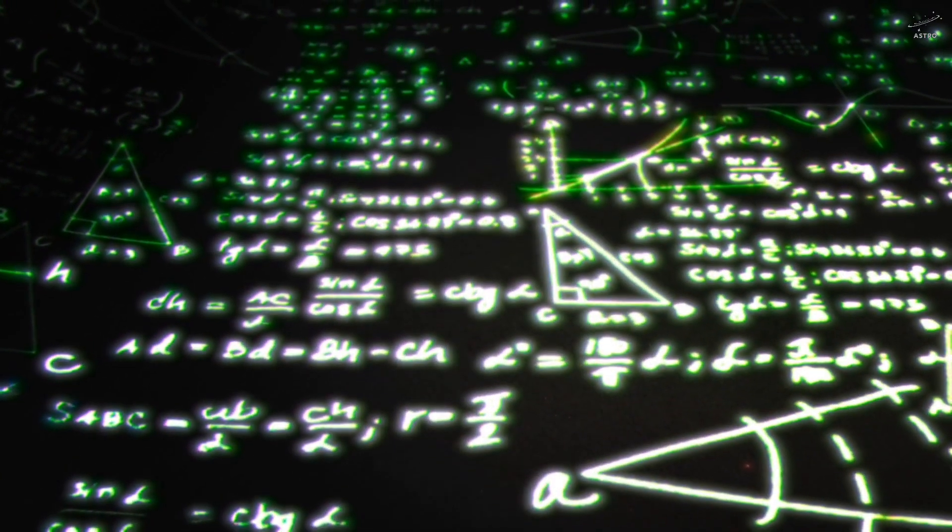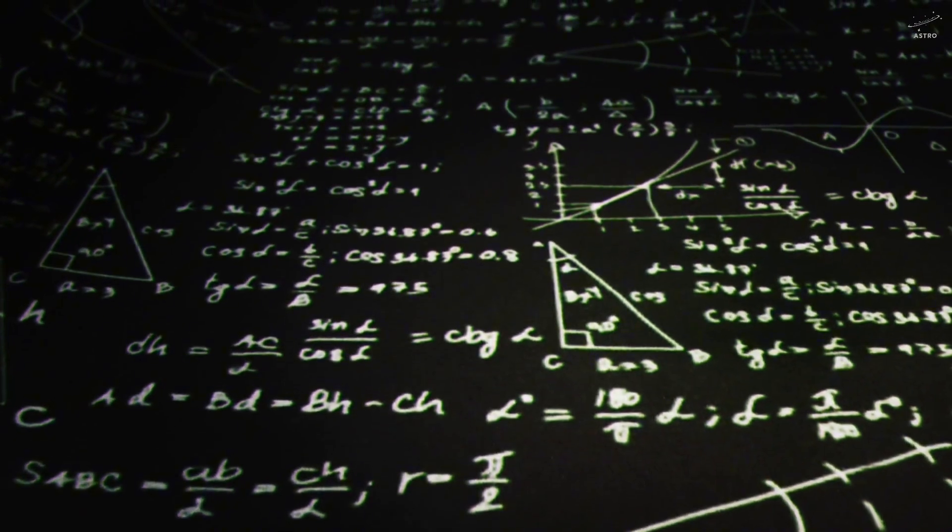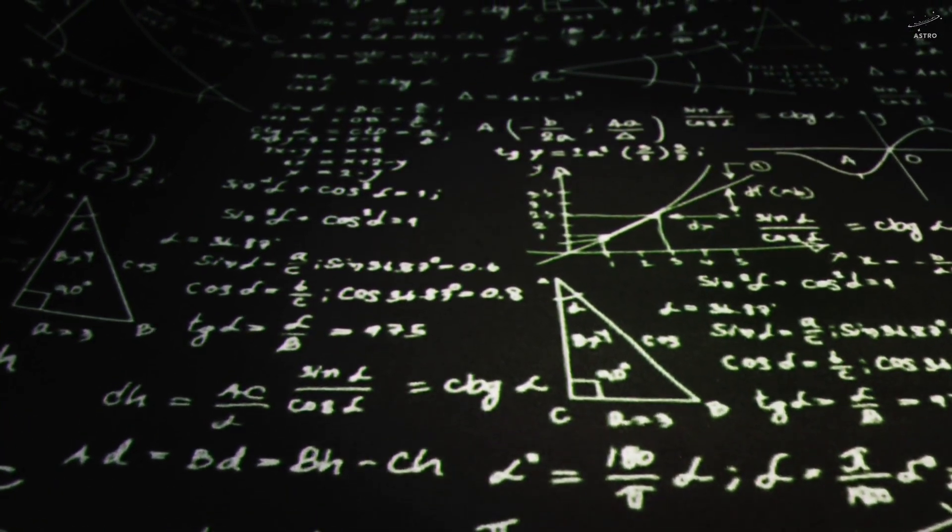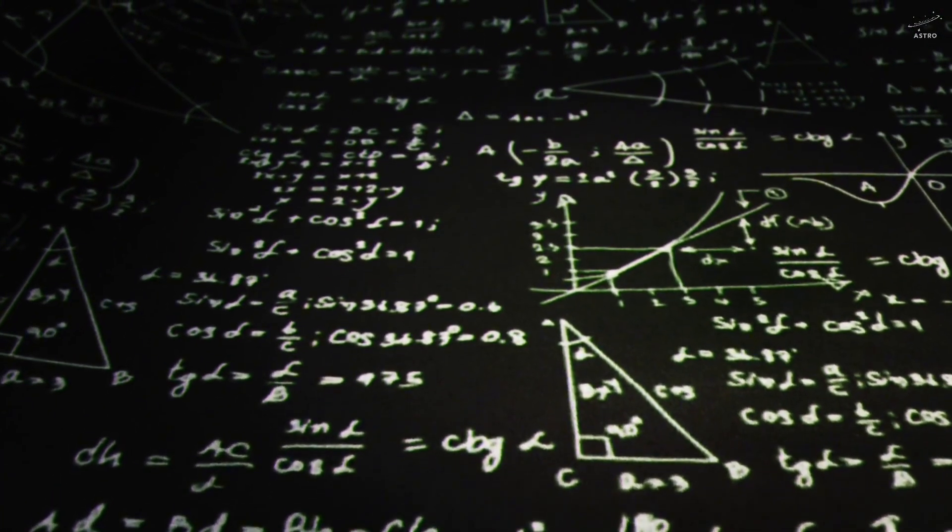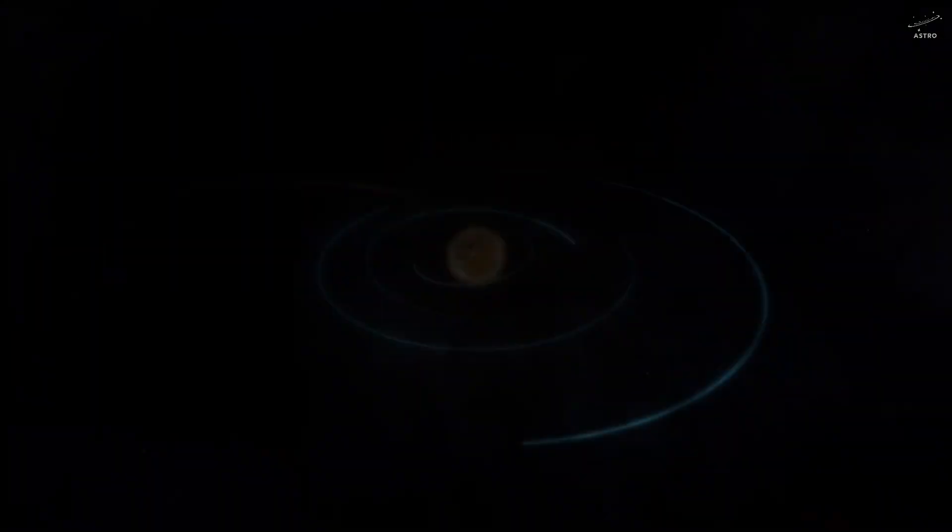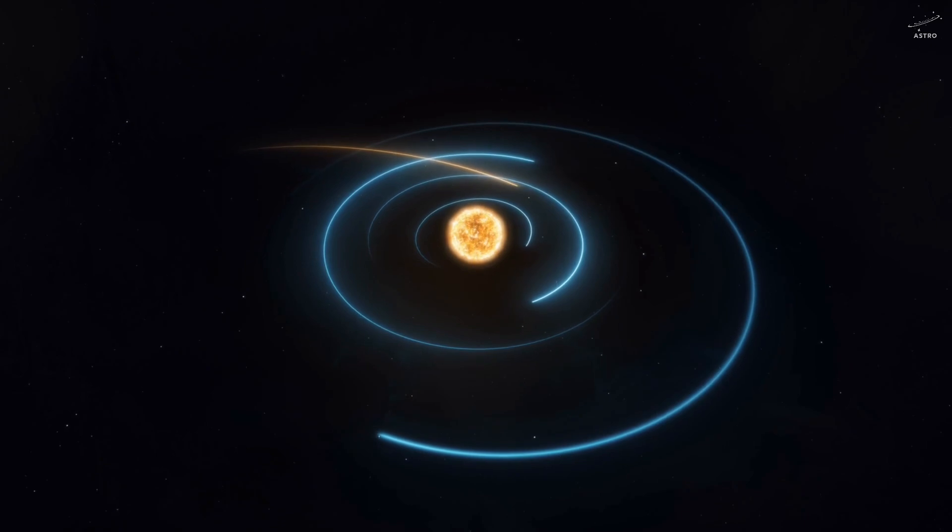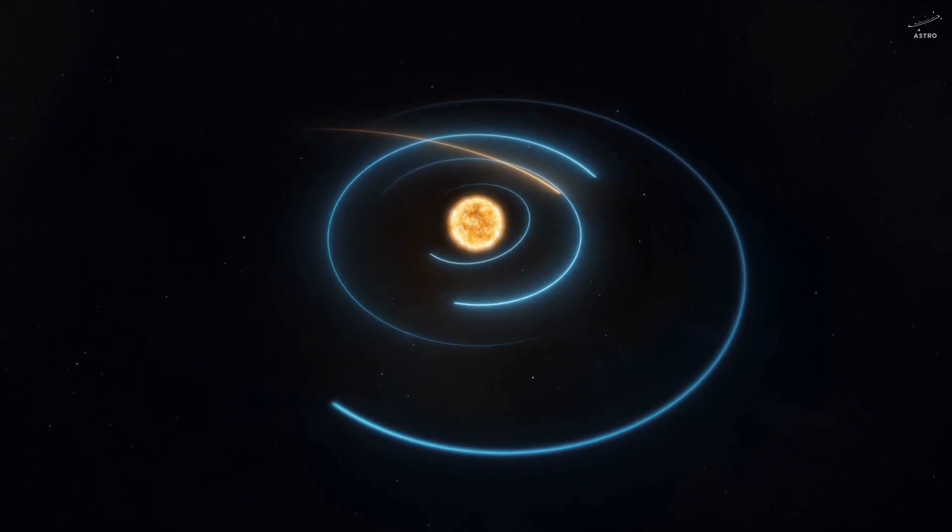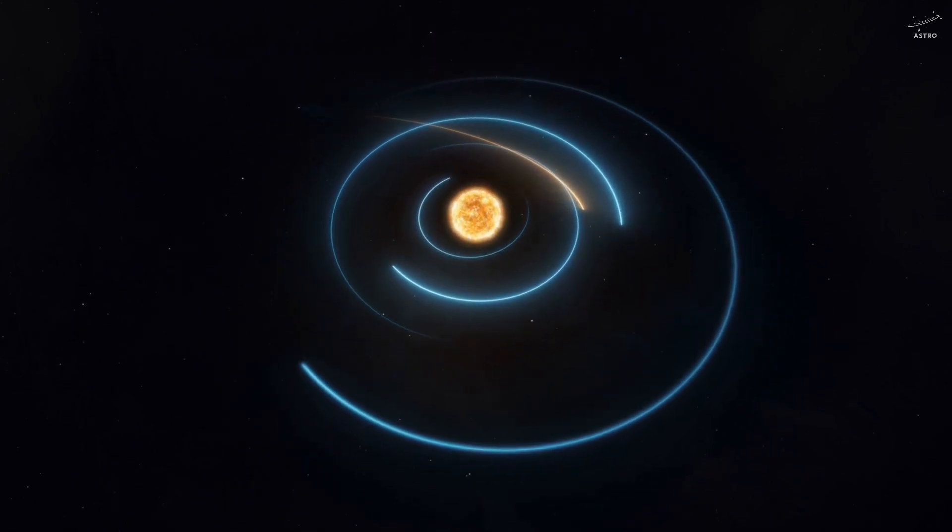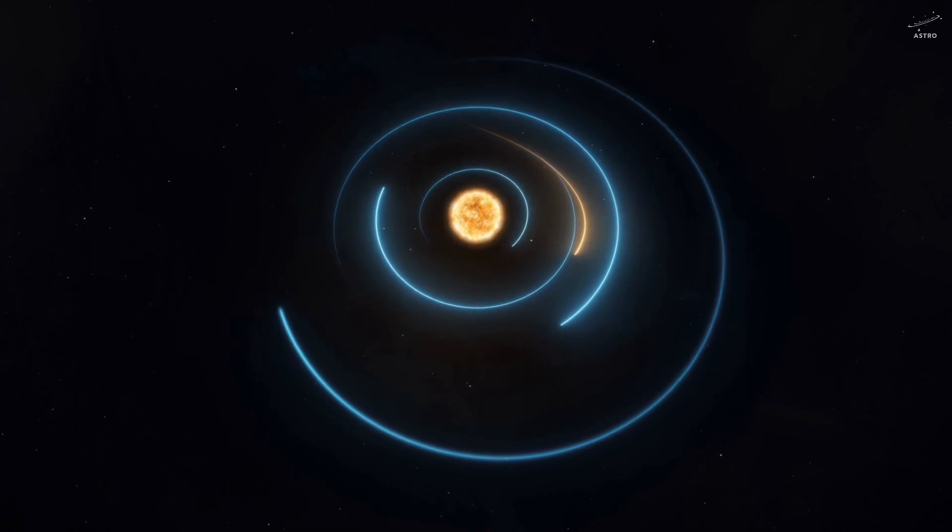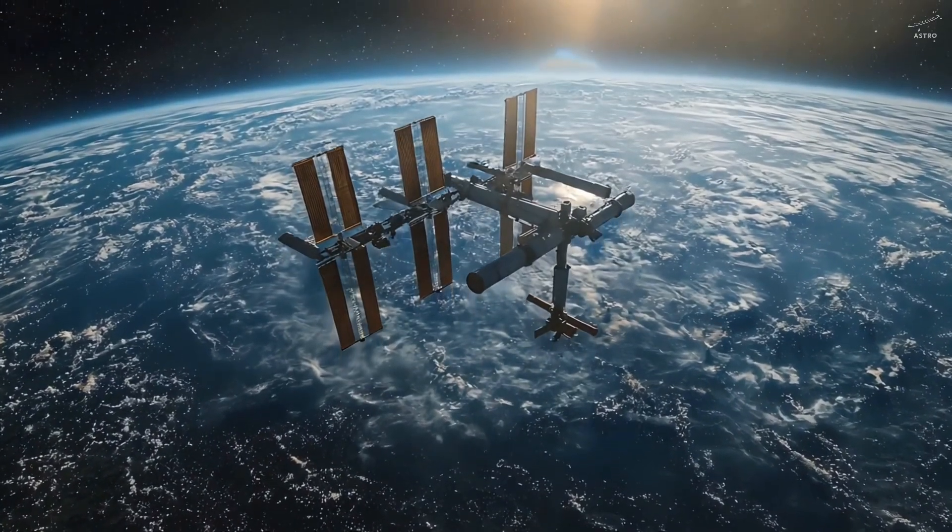A cannon, sitting on top of a mountain so high, it reaches beyond the atmosphere. No air. No resistance. Now, fire a cannonball. At low speed, it falls back down. Fire it faster, it travels farther. Faster still, and it arcs even farther away. But at one precise speed.